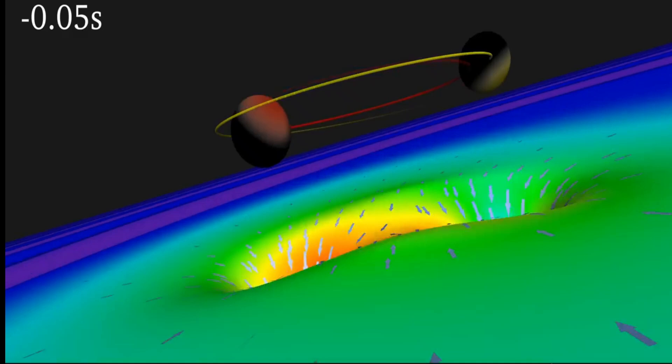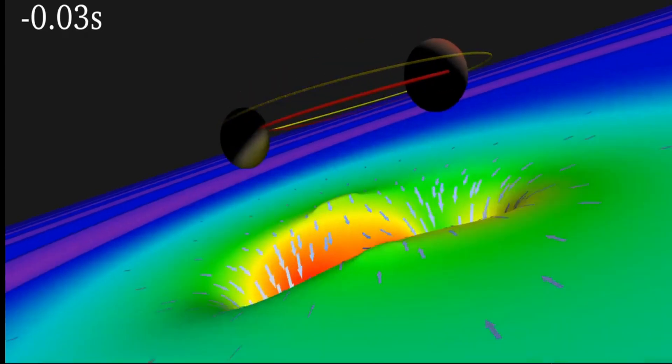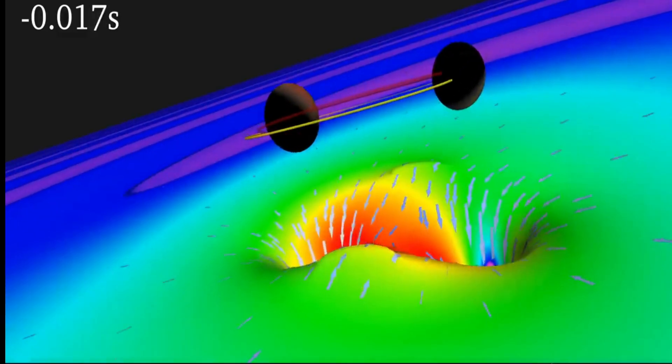The gravitational waves carry away energy, causing the black holes to spiral inward and collide.